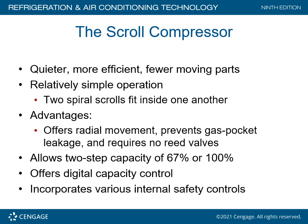Scroll compressors are quieter, more efficient, and have fewer moving parts. Probably 90% of the air conditioning equipment you'll work on in the field uses scroll compressor design. Two spirals (scrolls) fit inside each other. Advantages include radial movement, which prevents gas pocket leakage and requires no reed valves. They allow two-step capacity of 67% or 100% pumping, offer digital capacity control, and incorporate various internal safety controls. Essentially, you can ramp up and ramp down the speed of a scroll compressor.